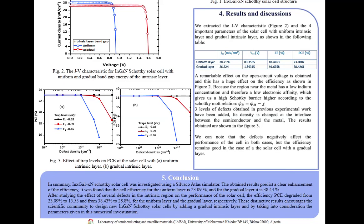In summary, indium gallium nitride Schottky solar cell was investigated using the Silvaco Atlas simulator. The obtained results predict a clear enhancement of the efficiency. It was found that the cell efficiency for the uniform layer is 23% and the gradual layer is 38%.